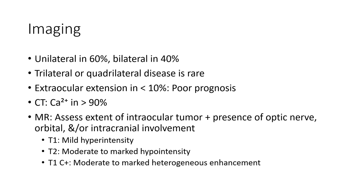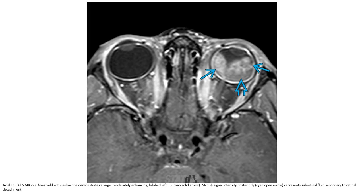On MRI: T1 shows mild hyperintensity; T2 shows moderate to mild hypointensity; T1 with contrast shows moderate to mild heterogeneous enhancement. Case example: MRI with contrast in a three-year-old with leukocoria demonstrates a large, moderately enhancing left retinoblastoma. Mildly hyperintense signal posteriorly represents subretinal fluid secondary to retinoblastoma.